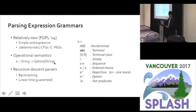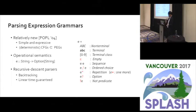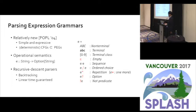As a result, we can easily generate recursive descent parsers with backtracking. Backtracking is sometimes a real problem because it causes an exponential time cost in worst cases. But as the previous speaker explained, linear time parsing is guaranteed due to the packrat parser.